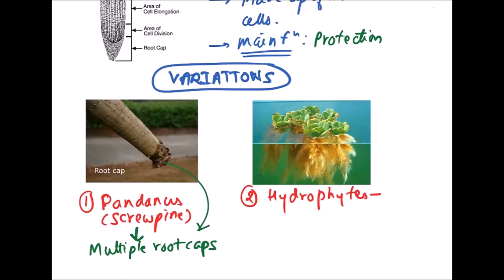Second example is of hydrophytes like Lemna, Pistia, and Eichornia. In such plants, root pockets are present instead of root cap.